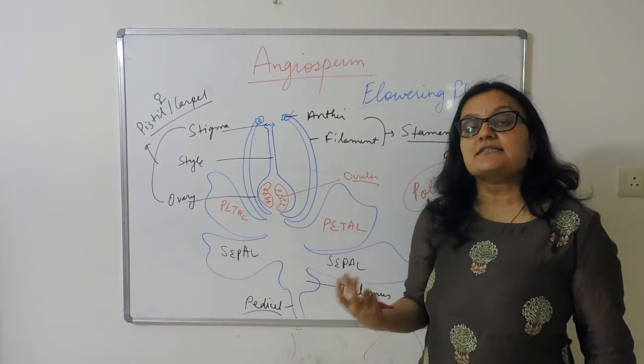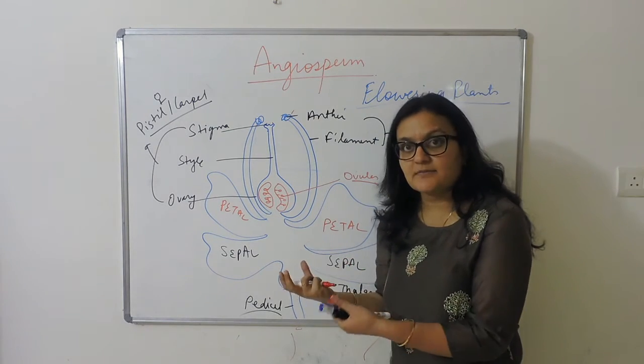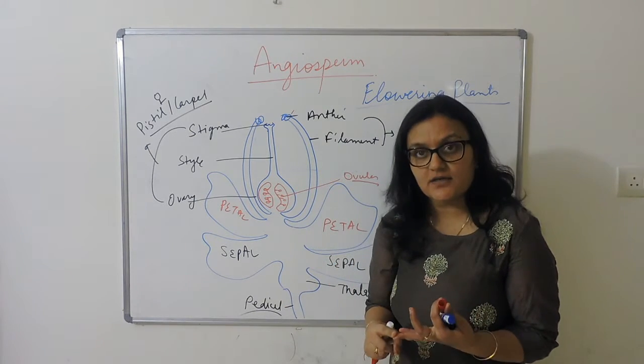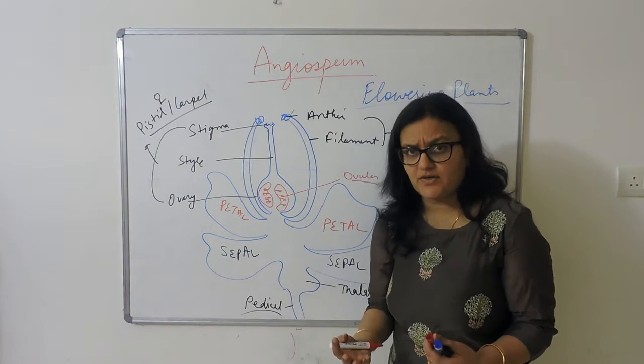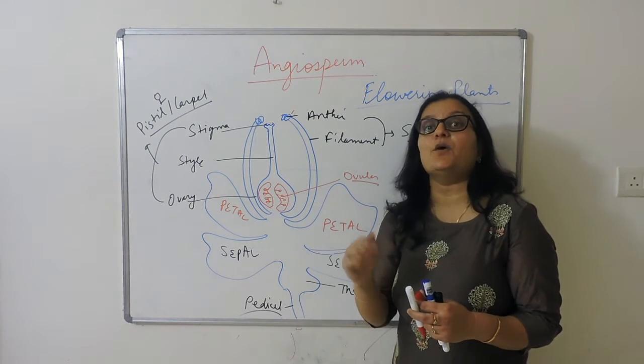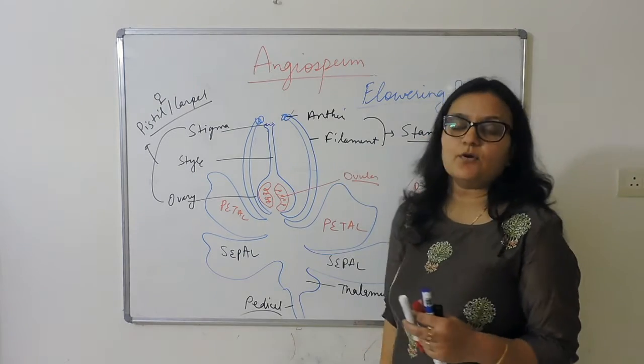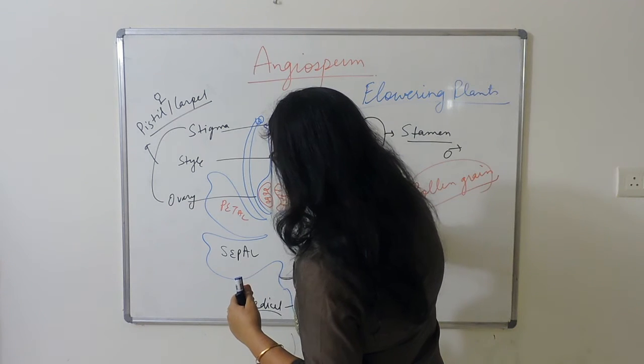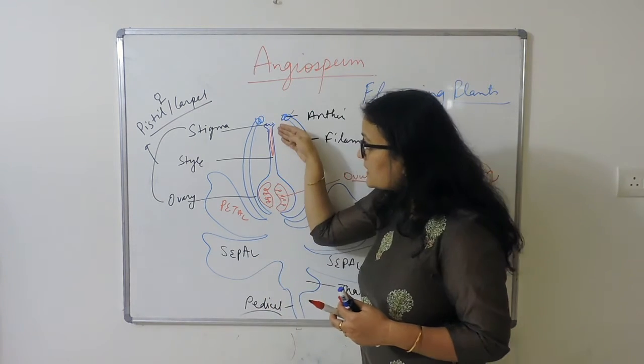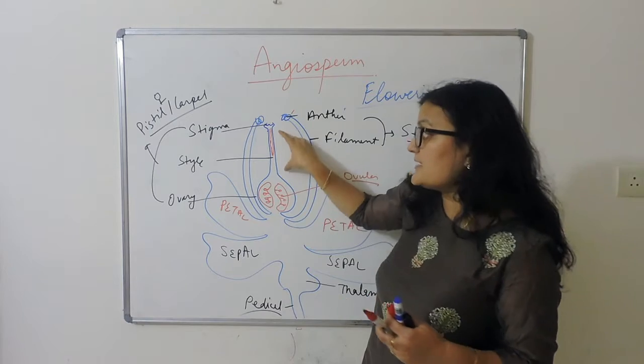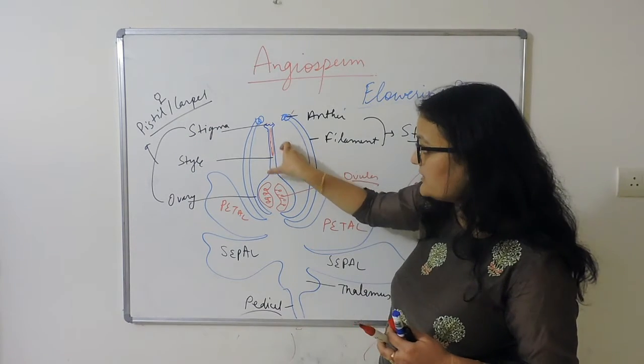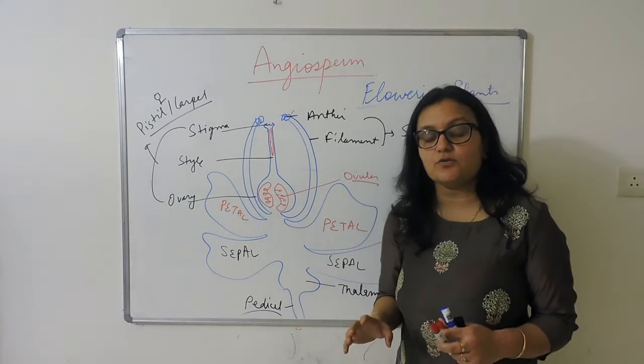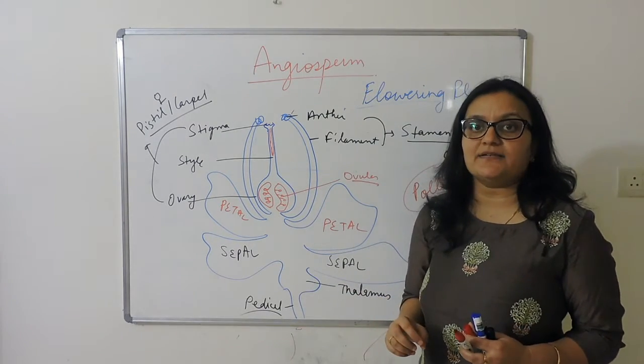Pollen grains are non-motile, so they need some agents to travel - either wind, water, or any animal, insect, or bird. That process is called pollination. When pollen grain lands on the stigma, it germinates and forms the pollen tube. The pollen tube grows from the stigma through the style to the ovary. Ovules undergo meiosis and form the female gametophyte, that is embryo sac.